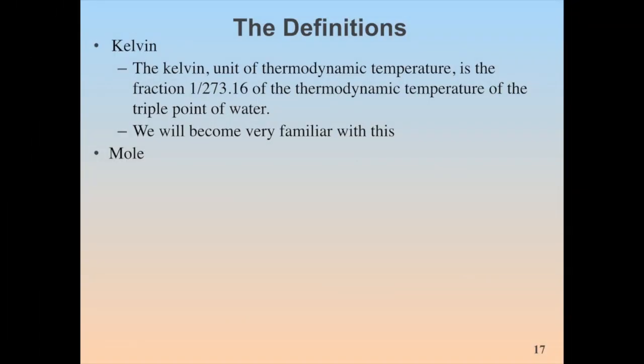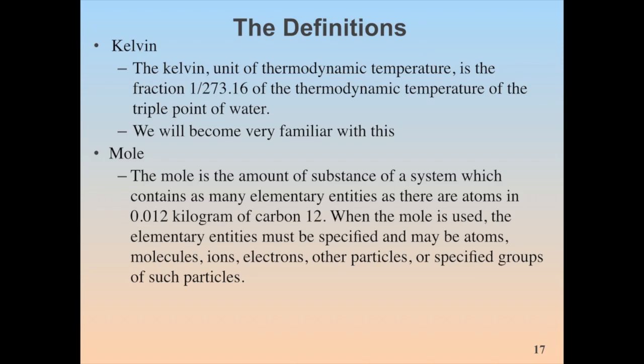All right, next up is the mole. Now this one has a bit of a long definition here, but we are going to become very familiar with the mole in a few weeks. So the mole is the amount of substance of a system which contains as many elementary entities as there are atoms in 0.012 kilograms of carbon-12. When the mole is used, the elementary entities must be specified and may be atoms, molecules, ions, electrons, other particles, or specified groups of such particles.